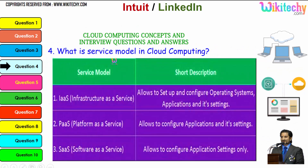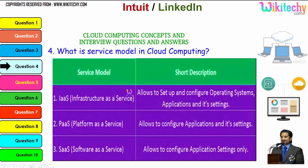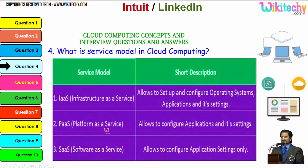Now the question is: what is the service model in cloud computing? There are three major service models. The first is Infrastructure as a Service, which allows you to set up and configure the operating system, application, and its settings. You are given a server — you can install a different operating system or any other software you want.